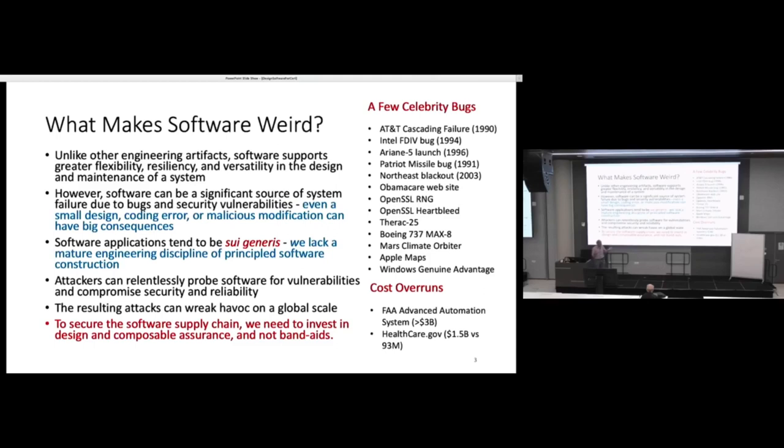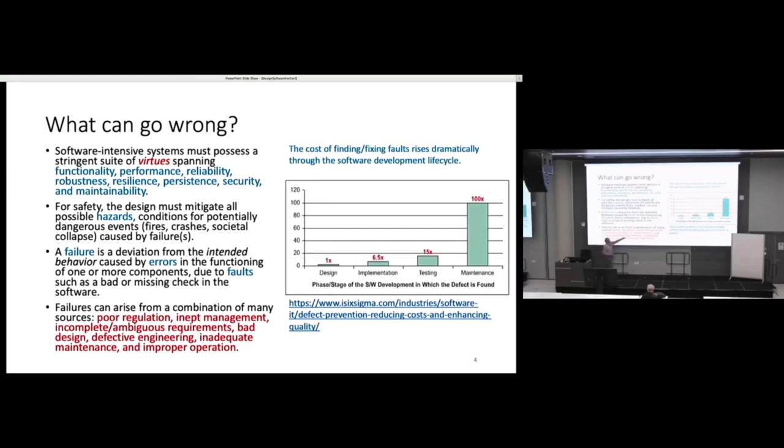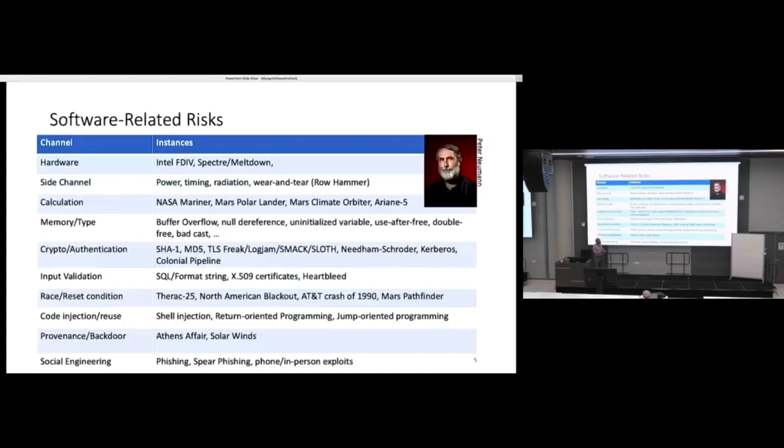The advanced automation system, healthcare.gov with Obamacare—we can explain what went wrong after the fact, but the cost runs into billions. One of the things I put in here is inept management, which I often indicate you don't really need. The inept there is redundant. You can just say management. This is a difficult task. We don't have a science of how to manage software projects either.